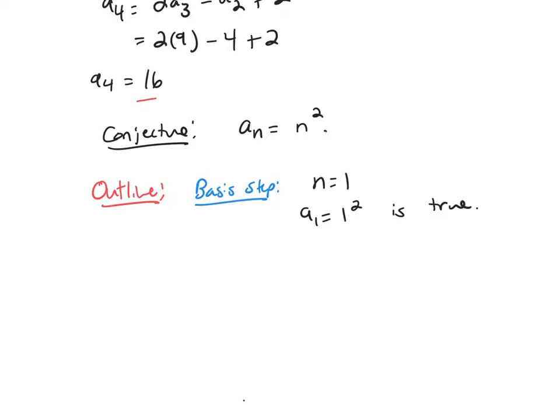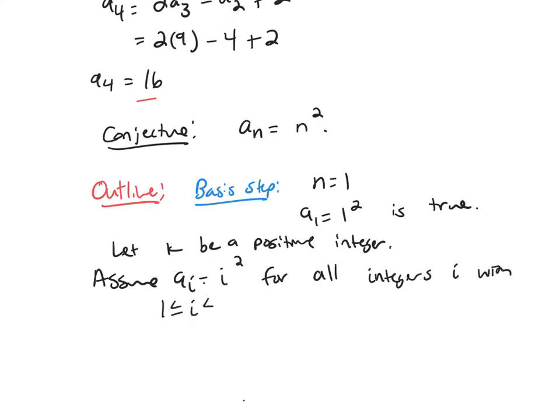And so now for our inductive step, let k be a positive integer. Assume a_i = i² for all integers i with 1 ≤ i ≤ k.